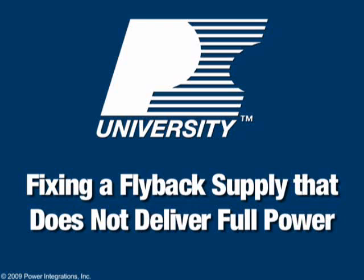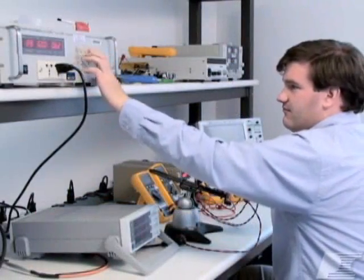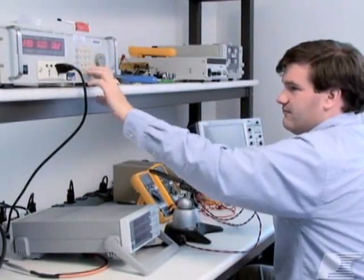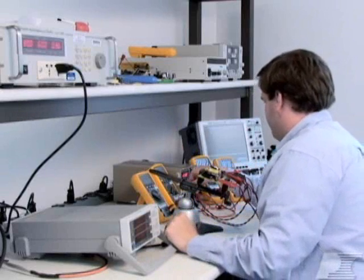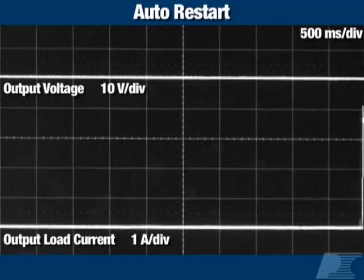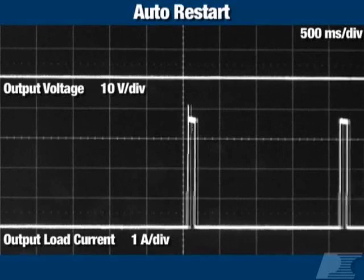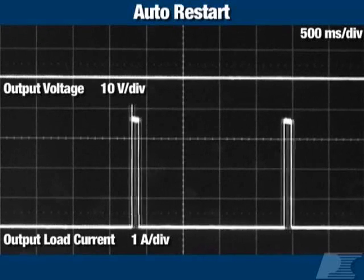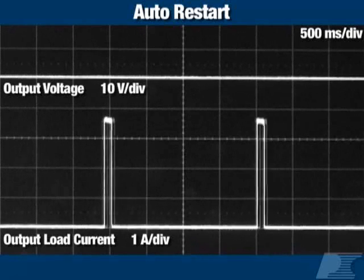Welcome to the Power Integrations course: Fixing a Flyback Supply which Does Not Deliver Full Power. Before starting this course, you should have built a flyback power supply and identified through the bring-up procedure that the output doesn't deliver full power when a load is applied. The power supply should start up without entering auto-restart and should be able to regulate output voltage with no load and very light loads applied.